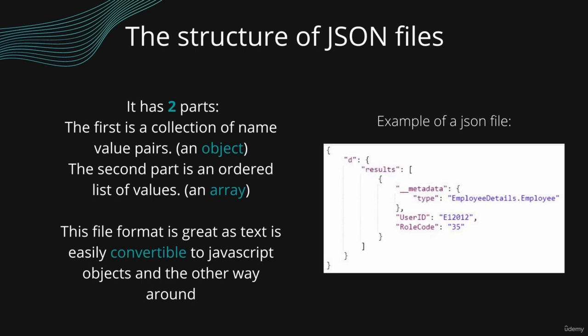The second part that a JSON file can have is an ordered list of values, which you can associate in most languages with an array, vector, list, or sequence.